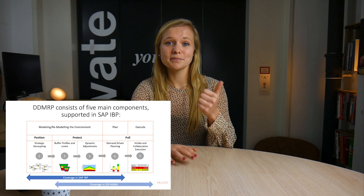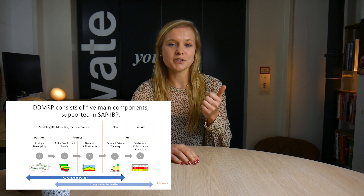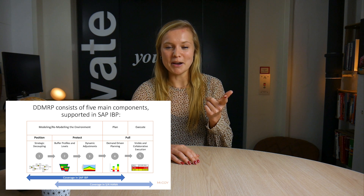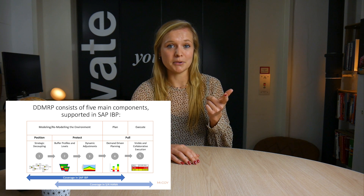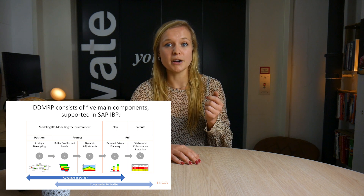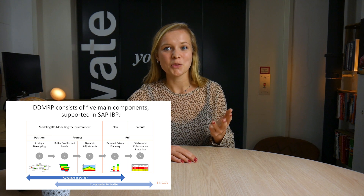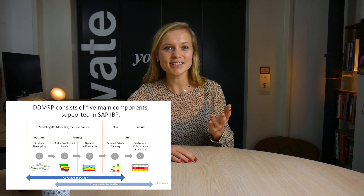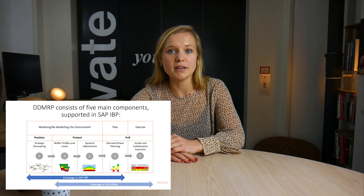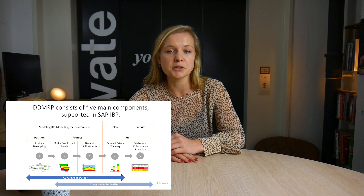The five components are: strategic inventory positioning to determine where the decoupling points are placed; buffer profiles and level determination to define the amount of protection at those decoupling points; dynamic adjustments — how that level of protection changes based on market changes and future events; demand-driven planning — which supply orders are recommended and generated; and visible and collaborative execution, where priorities are reviewed, inventory projections and the buffer and signal integrity status are checked to manage open supply with IBP.